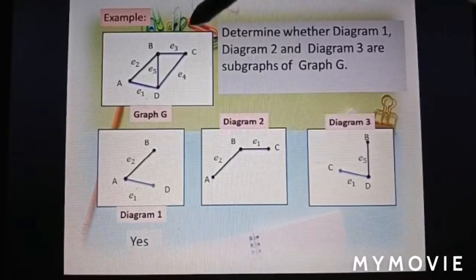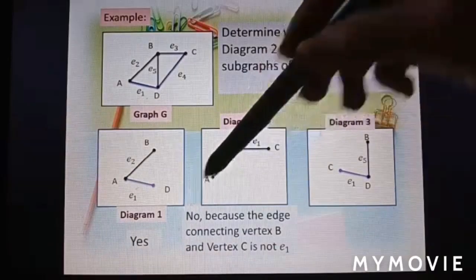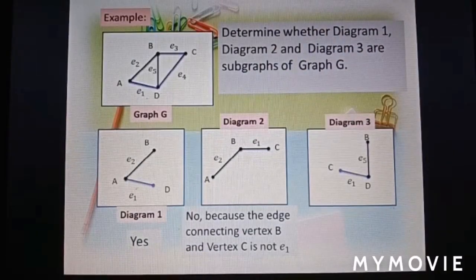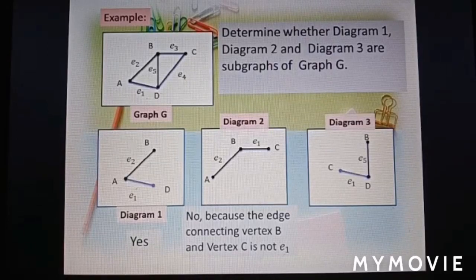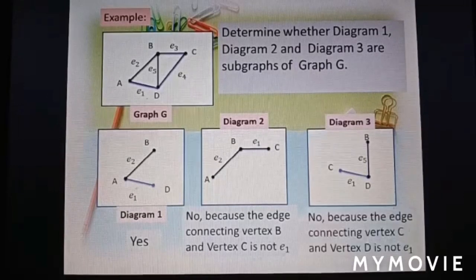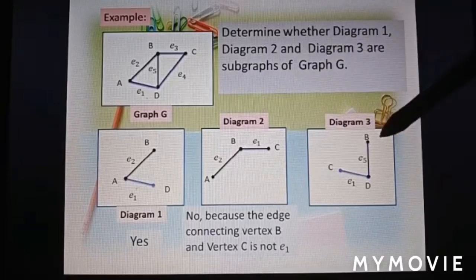We look at diagram 2. AB with edge e2, BC with edge e3. Here it shows e1. So this is not a subgraph because the edge connecting vertex B and vertex C is not e1, it's e3.